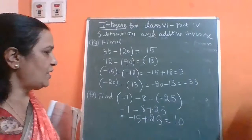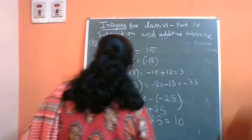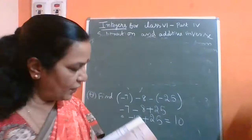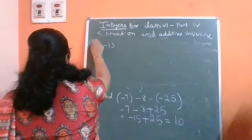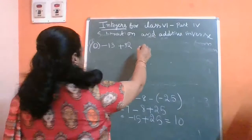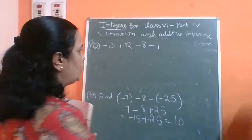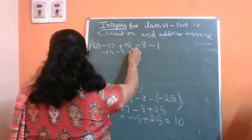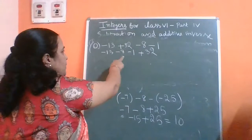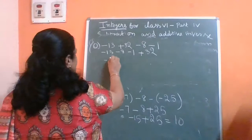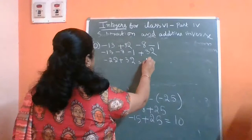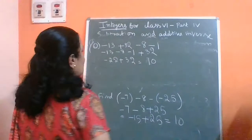One more question from the textbook: minus 13 minus 13 plus 32 minus 8 minus 1. Group all the numbers having minus sign together: minus 13 minus 8 minus 1 plus 32. Adding 13 plus 8 is 21, and 21 plus 1 is 22, so it becomes minus 22 plus 32. The answer is plus 10.